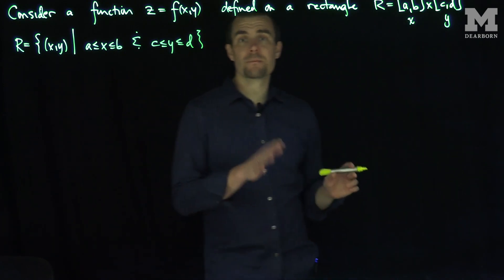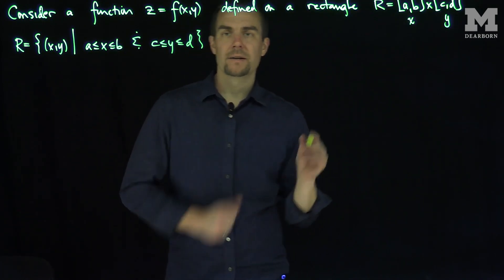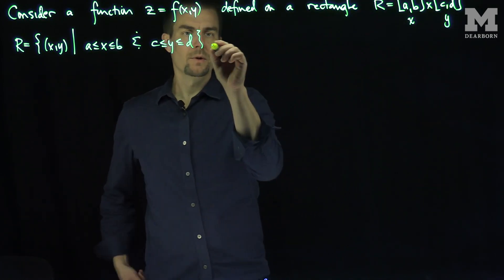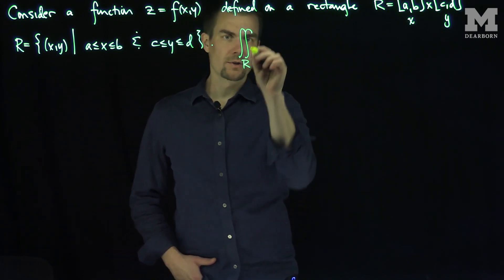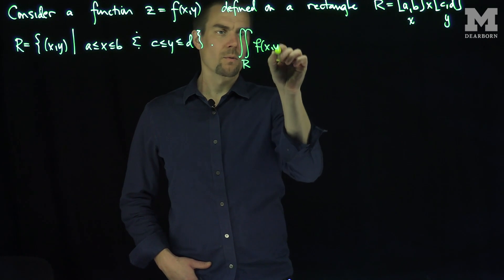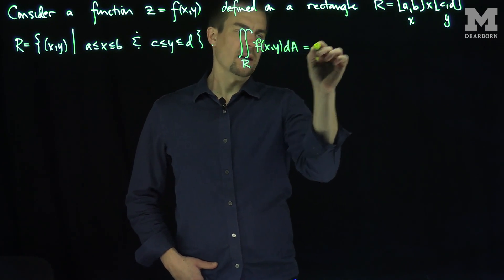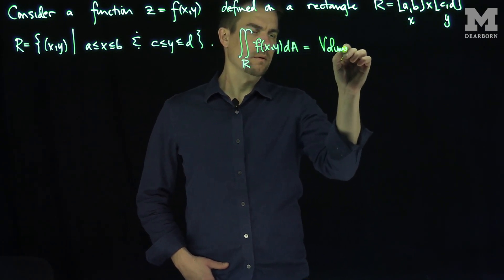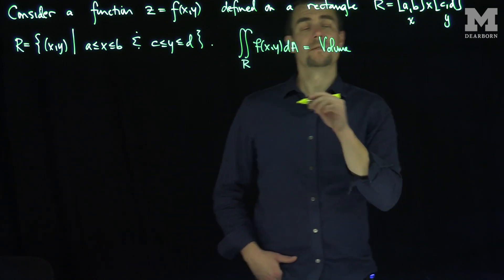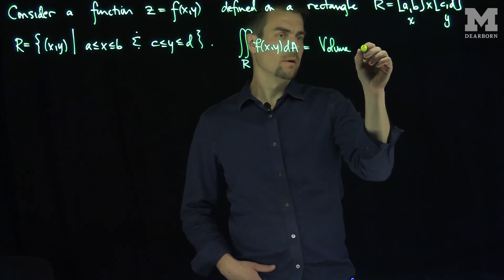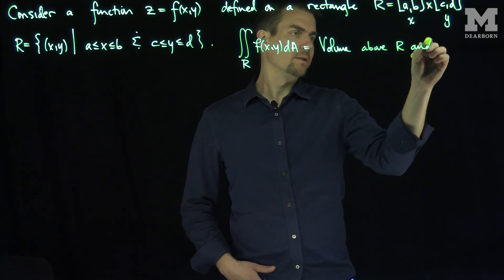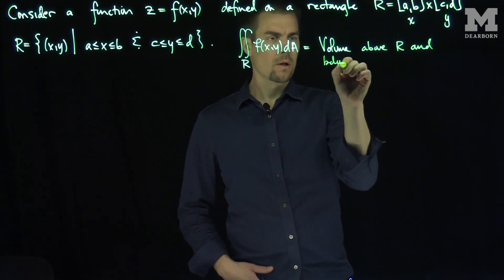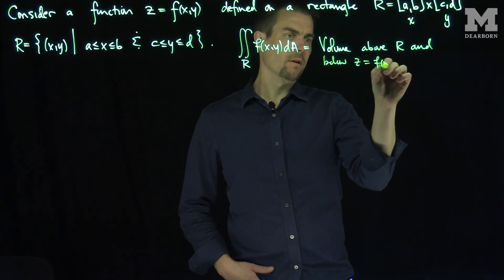Now, we've seen previously how we can find what this symbol means. The double integral over this rectangle R, that's my region, of f of x, y dA is the volume above R and below z equals f of x, y.